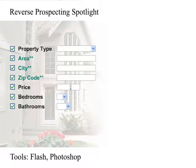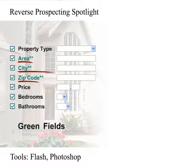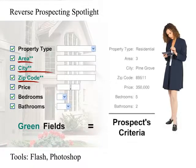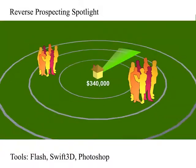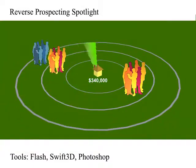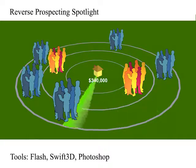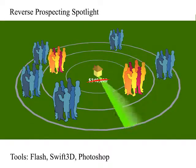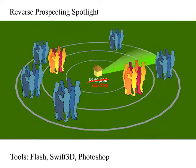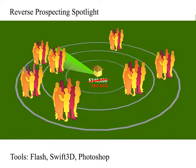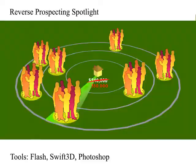This is especially true of the green color-coded fields, which require an explicit match with the prospect's criteria. You can run a second reverse prospecting search and find that dropping the price by $10,000 would increase the number of interested buyers to 60.